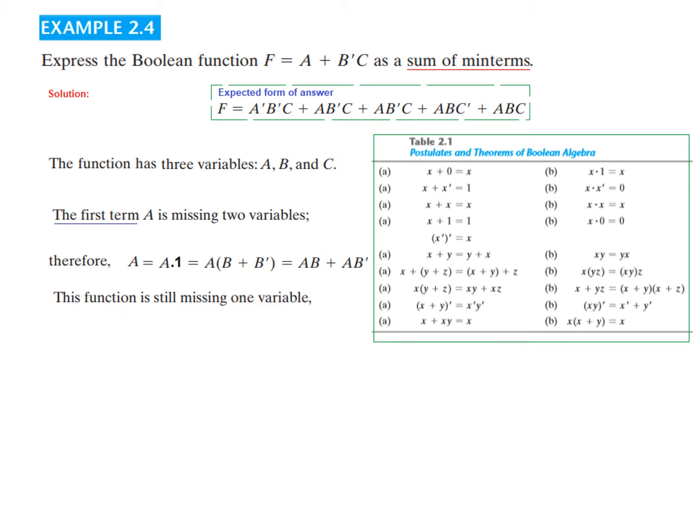The function is still missing one variable that is C. So we have to incorporate C as well. So we follow the same technique. We just assume that AB is AB into 1, and AB' is also AB' into 1. And for 1 we replace C + C̄. So 1 again using this, C + C̄ is equal to 1. And x + x̄ is equal to 1. So we use C + C̄ in both the cases. And now if we simplify then this becomes our final value of A which has all the three variables. So this is part number 1.